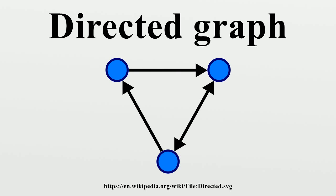A is a set of ordered pairs of vertices, called arrows, directed edges, directed arcs, or directed lines. It differs from an ordinary or undirected graph,